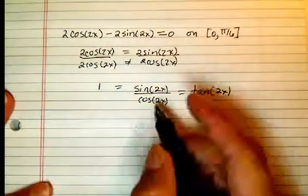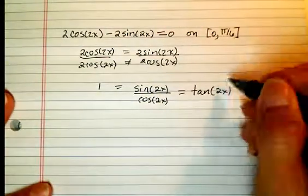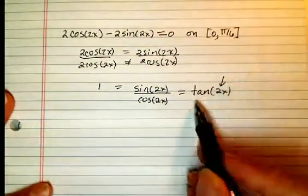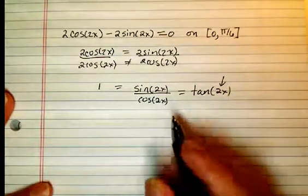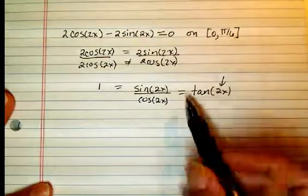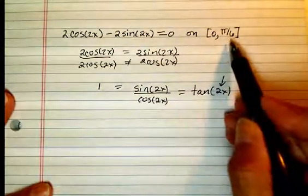Now what we need to solve is for which 2x's is the tangent of 2x equal to 1. And we know that the tangent of an angle equals 1 on this interval, 0 to pi over 6.